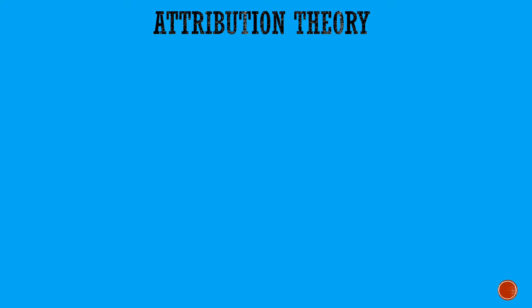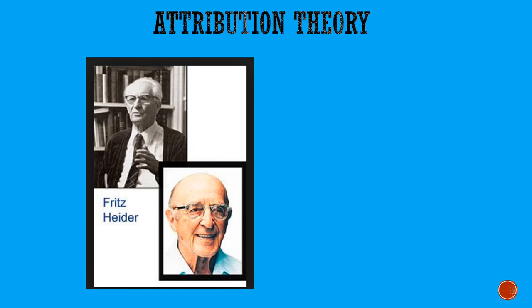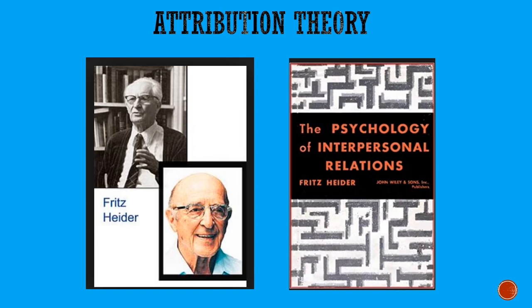The origin of attribution theory would probably be traced to 1958, when a psychologist named Fritz Heider published a classic book titled The Psychology of Interpersonal Relations. Heider was not really an attribution theorist, but his book opened up the questions that attribution theorists would later take up. Heider talked about something he called naive psychology — he was interested in how the average person without advanced degrees in psychology made judgments about other people, and how we draw social conclusions.